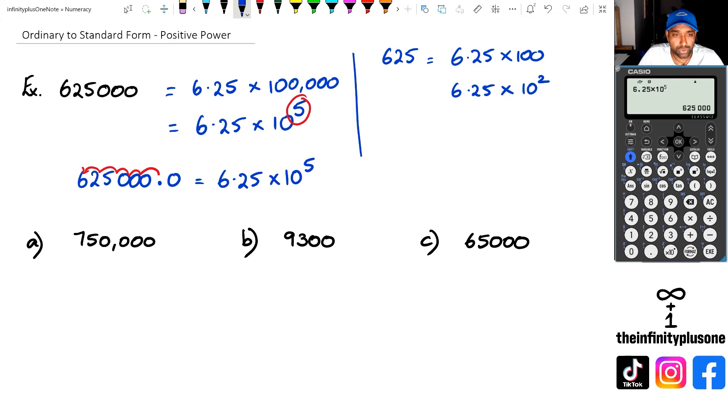I'm going to do a couple of quick examples using both methods. For the long method, I want this to be 7.5. So I'm going to get 7.5 times 10 to the power of what? I'm going to take 750,000 and divide it by 7.5. As you can see, that is 100,000, which is the same as 10 to the power of 5.